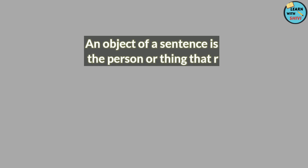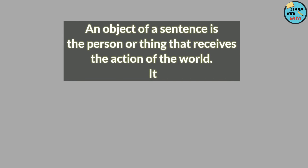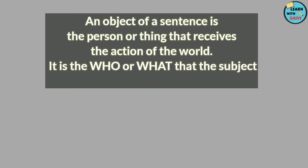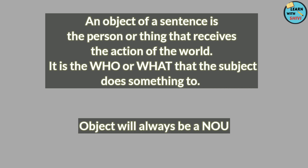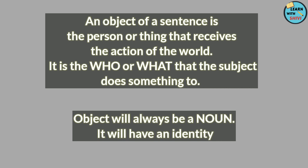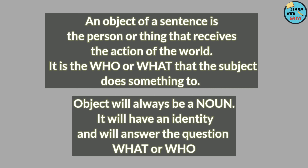What is an object? An object of a sentence is the person or thing that receives the action of the verb. In a sentence, if you are able to identify the subject and the verb, then you can easily find out who is receiving the action — in other words, the object. Also, an object will always be a noun; it will be something that you can relate to.